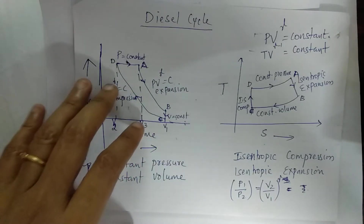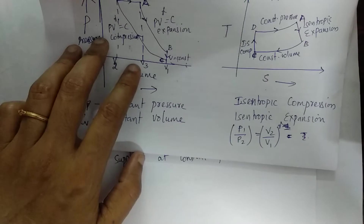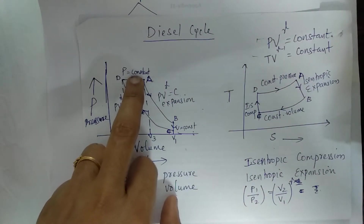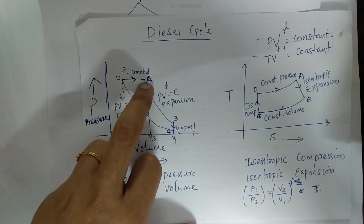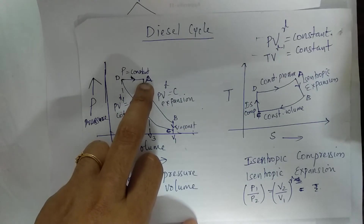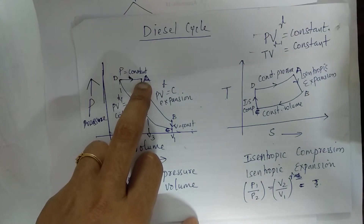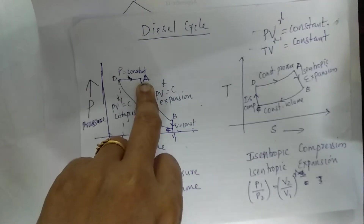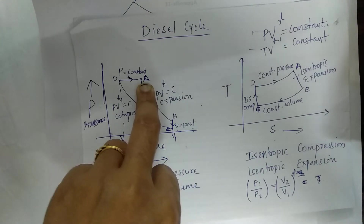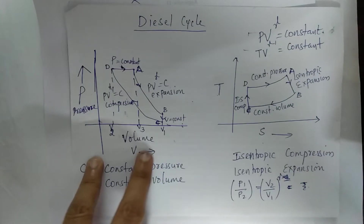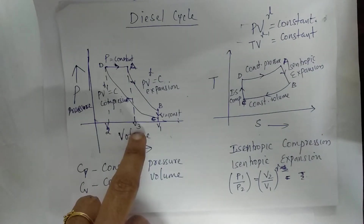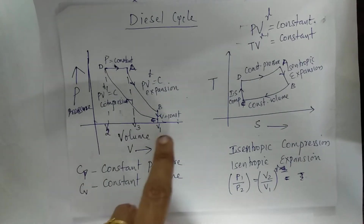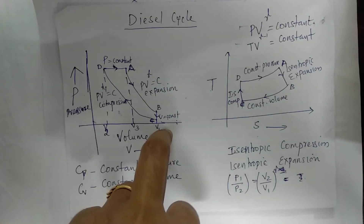We will now start with the heat supply. The pressure is constant — this is the power stroke and working stroke. We are going to supply Q1 amount of heat energy to the working substance. The state points are: volume V2, volume V3, and temperature T3 as shown in the diagram.